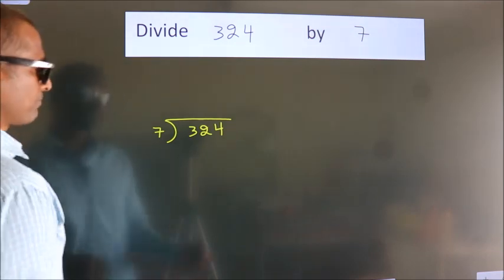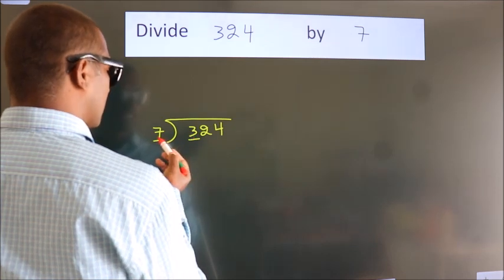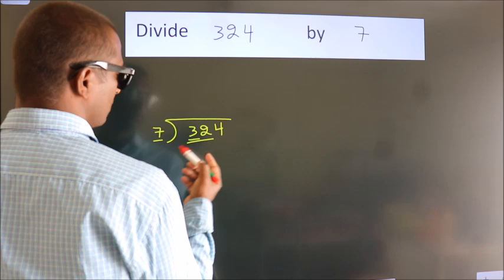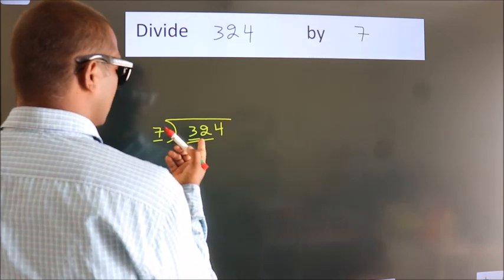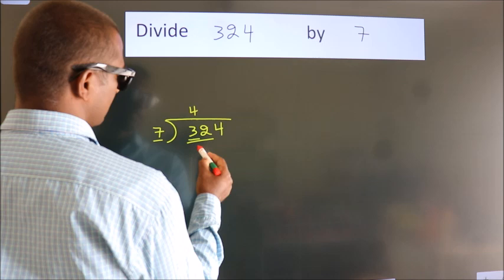Here we have 3. Here 7. 3 is smaller than 7, so we should take 2 numbers: 32. A number close to 32 in the 7 table is 7 fours, 28.